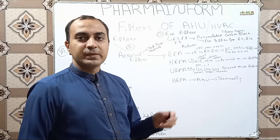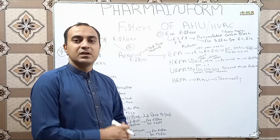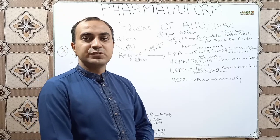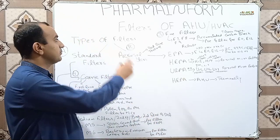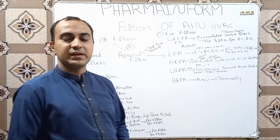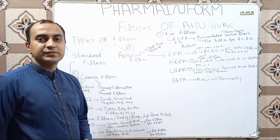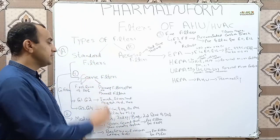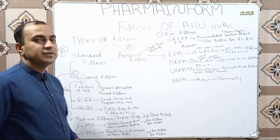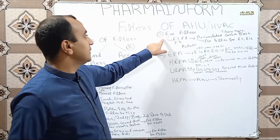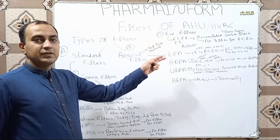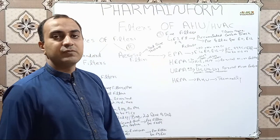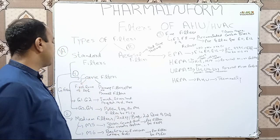We will discuss which types of filters are used and what is the classification of filters used in air handling units. Basically, there are two types of filters used in AHU: one is known as standard filters and the other is known as aerosol filters. Standard filters are further classified into three types: coarse filters, medium filters, and fine filters. Aerosol filters are classified into three types: EPA, HEPA, and ULPA.